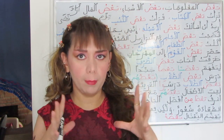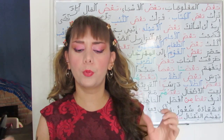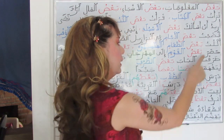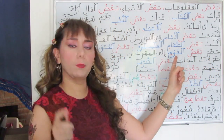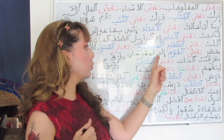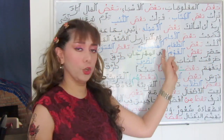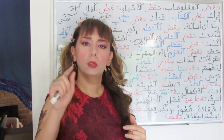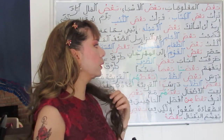The verb which precedes ba'd will usually be masculine singular, regardless of the number or gender of the noun or pronoun following ba'd. For example, hadara ba'du al-qawmi ila al-mahrajan — some people came to the festival. Here hadara is conjugated in the third person singular masculine even though the subject is plural.